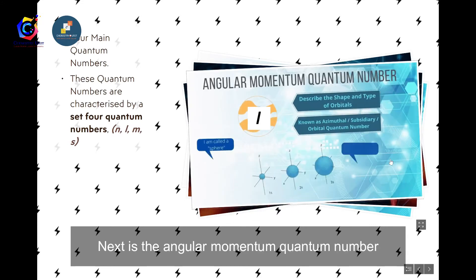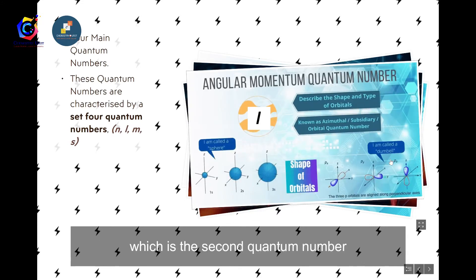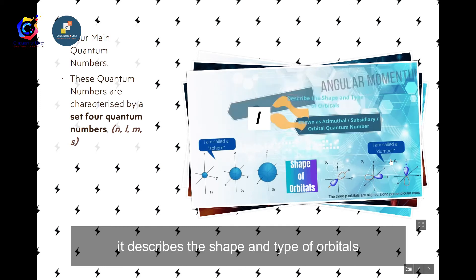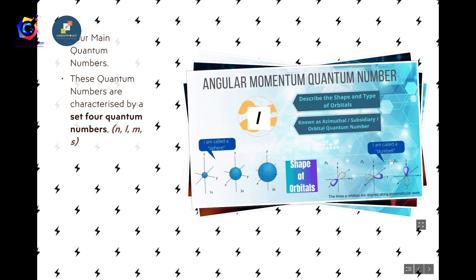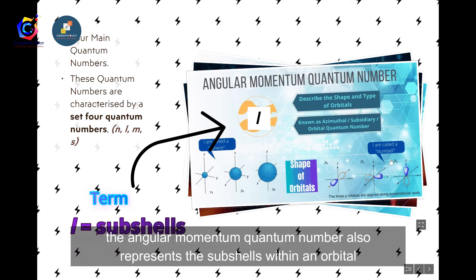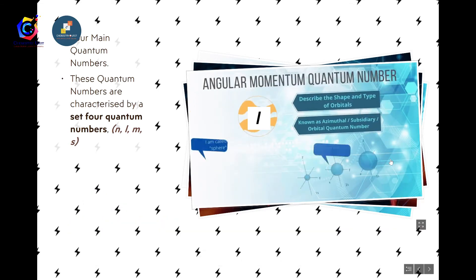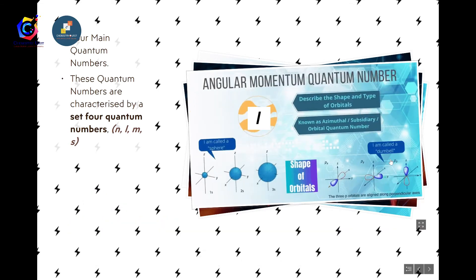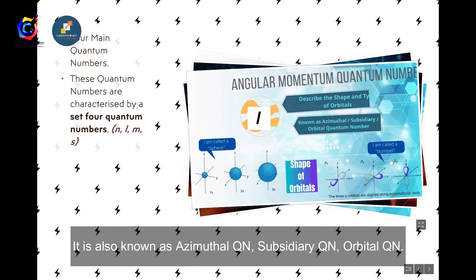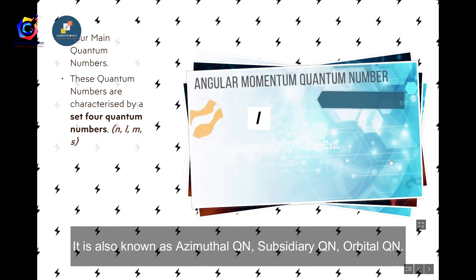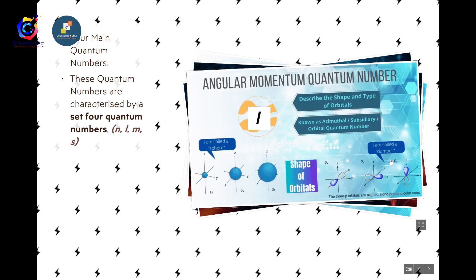The second quantum number is the angular momentum quantum number (l). It describes the shape and type of orbital, and also represents the subshell within an orbital. It is also known as the azimuthal, subsidiary, or orbital quantum number.